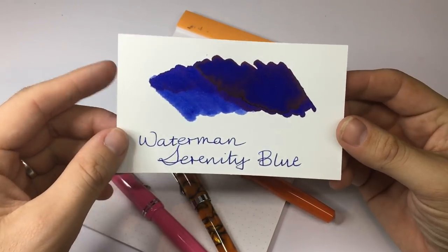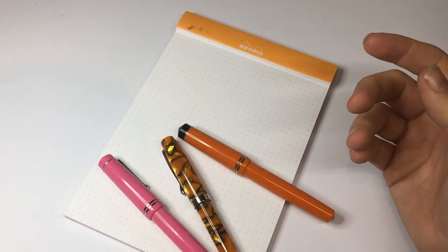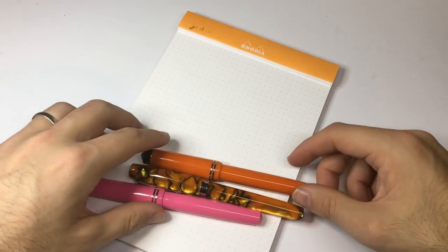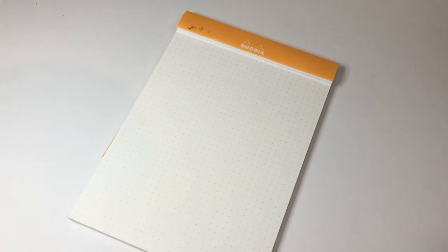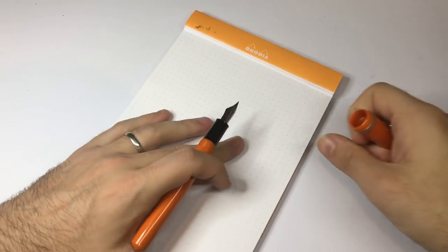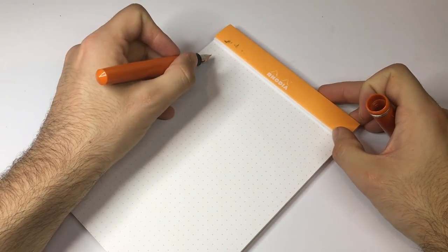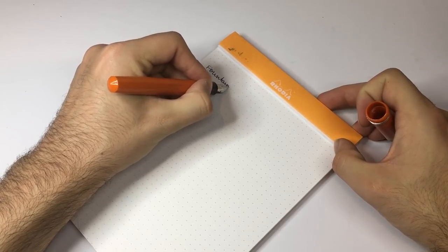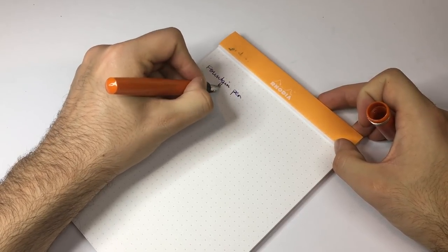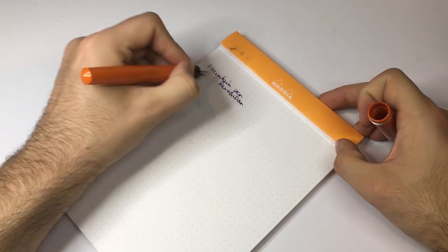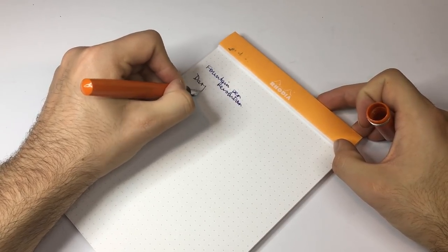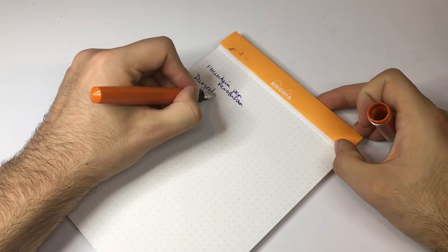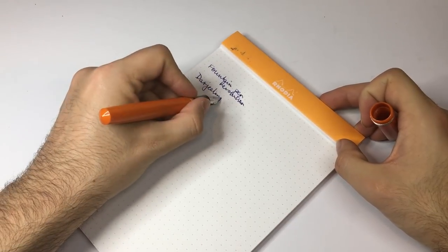Which you know is a lovely sort of standard blue with some interesting sort of red gold sheen. It's a really beautiful ink and a very well behaved ink, hence why I've chosen it for this review. So the first thing I'm going to do is I'm going to write with the standard medium nib on the Darjeeling.